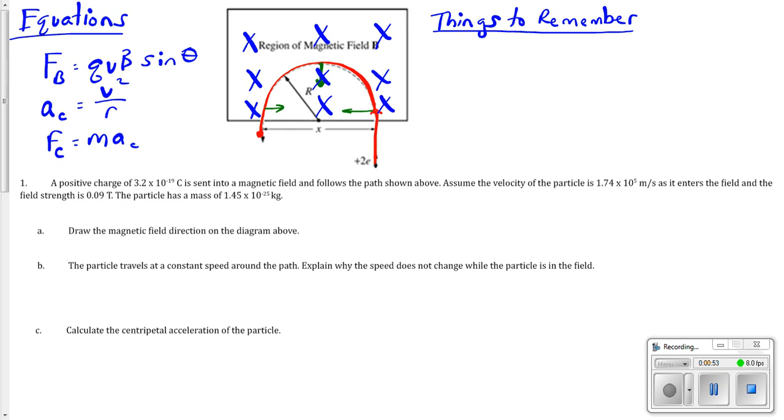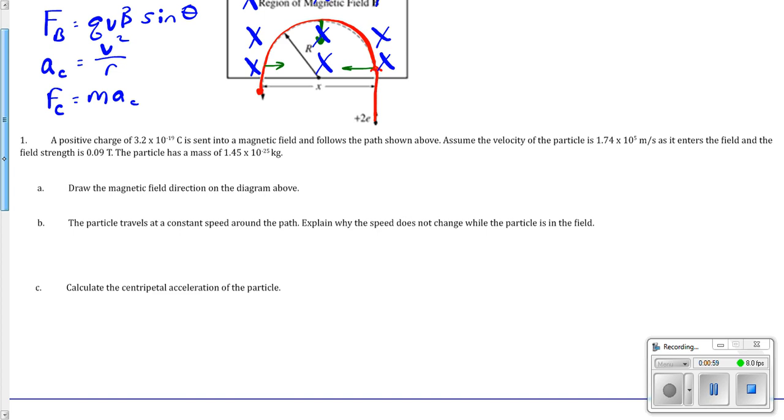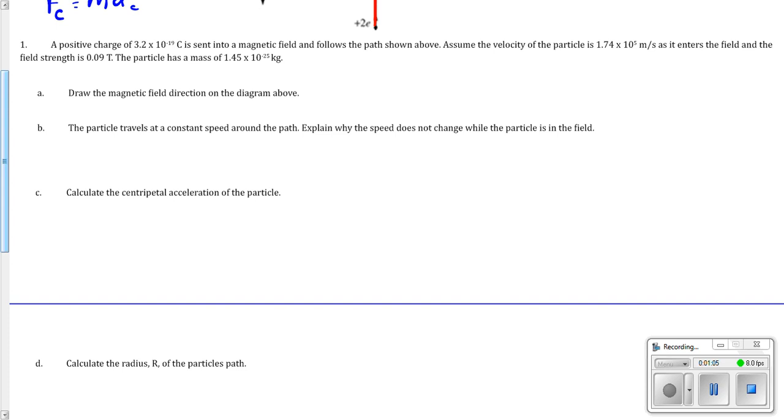The particle moves at a constant speed. Why does the speed not change while the particle is in the field? The force is constant, and it's being experienced all the time, but usually a force will cause it to accelerate, speed up, or slow down. Why doesn't this cause it to speed up or slow down? Because the force is looking at like a... Yeah, but why doesn't the centripetal force cause a change in velocity?